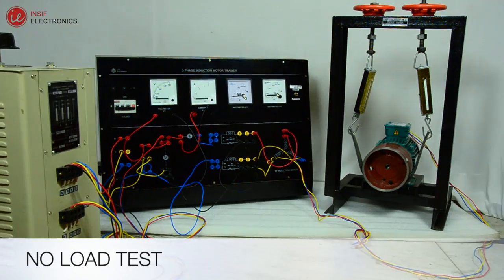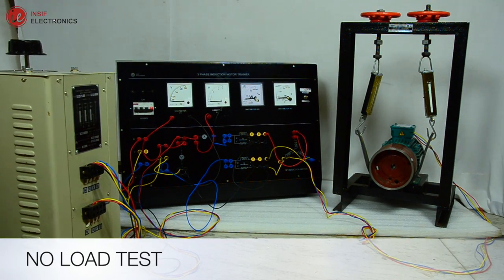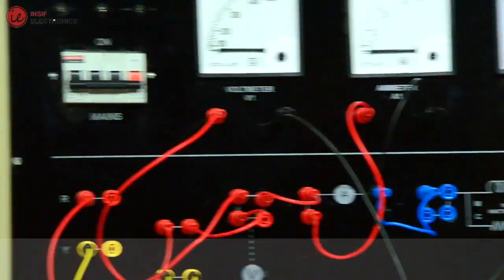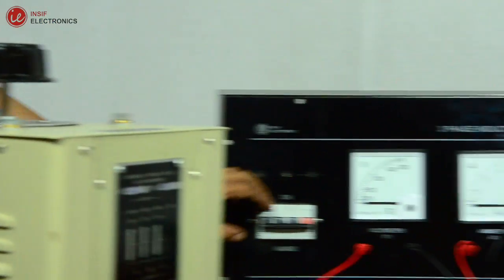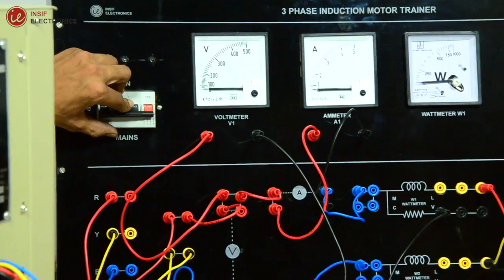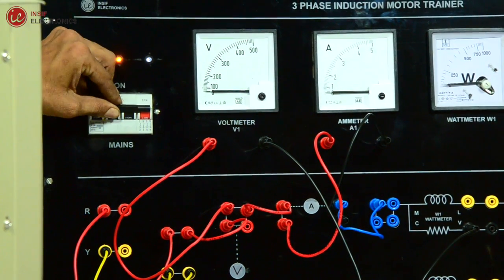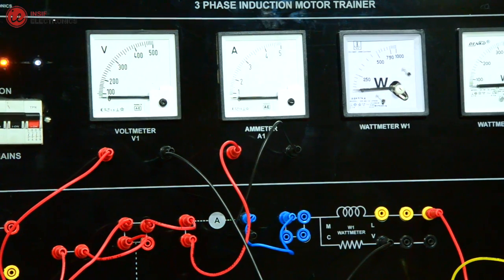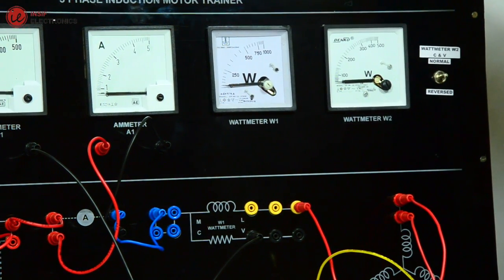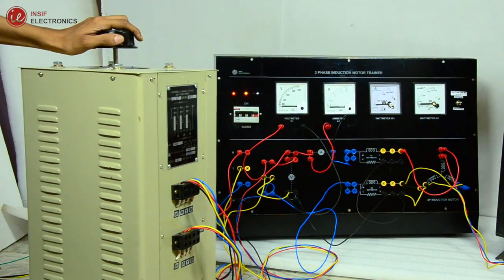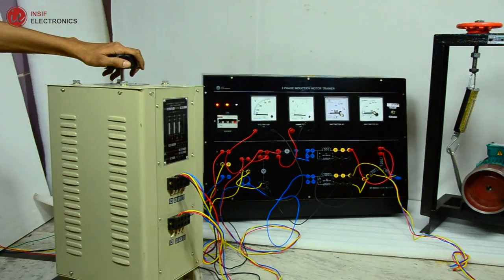Now let's start the no load test. For that, make sure the variac should be at minimum position and now switch on the panel by pulling up the MCB. Make sure all the pointers in the meters should be at zero position and loosen the load on motor. There should not be any load on motor as we are performing no load test.